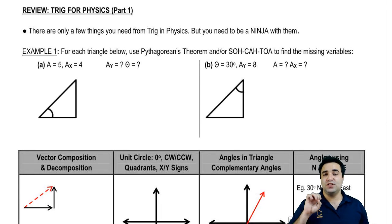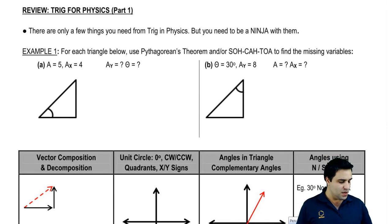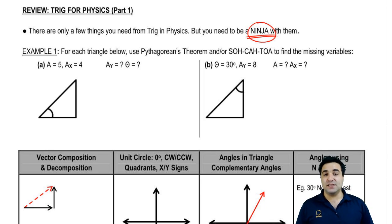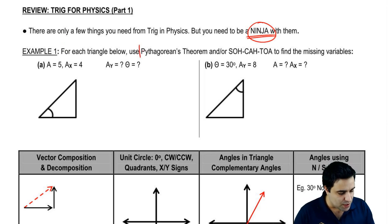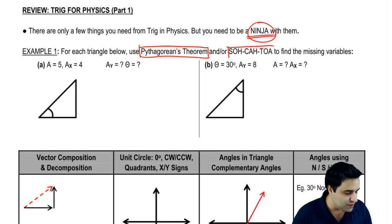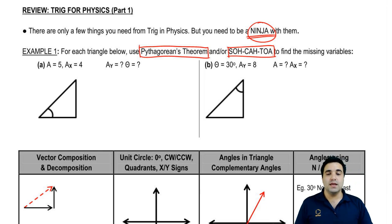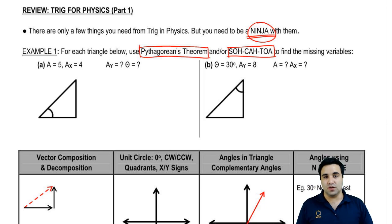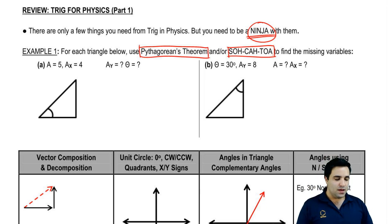Hey guys, so it turns out there are actually very few things you need from trig in physics, which is awesome news, but you need to be a ninja at them, because they're going to show up all the time. So first I'm going to show you some unusual uses of the Pythagorean theorem and SOHCAHTOA. Most of the time you'll use your four vector equations, but every now and then you'll get something weird thrown at you and have to use these.